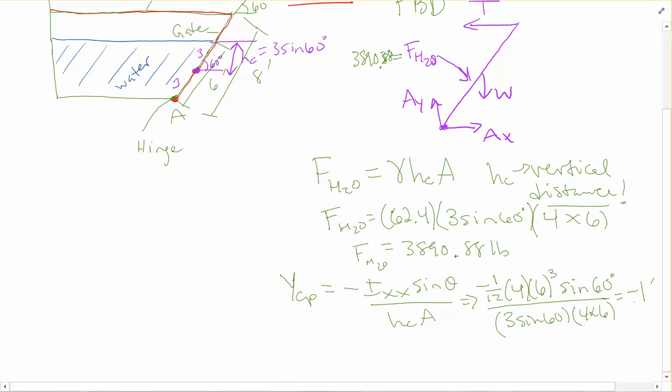Now remember this negative sign right here, that's just telling you it is below the center. So we're going to go down 3 from the top of the water and then down 1 more foot. So that means that this length here, from the top of the water down to that force, is going to be 4 feet. So we're at 4 feet there, and now that we're over here on this free body diagram, let's look at the weight.